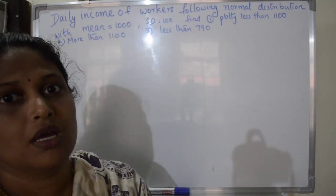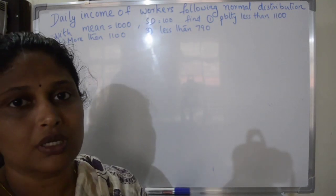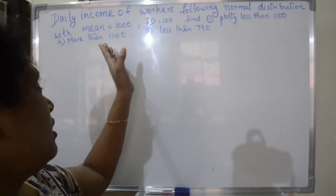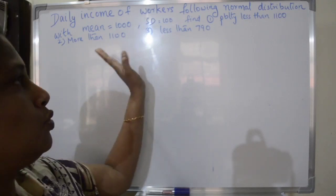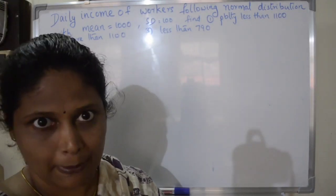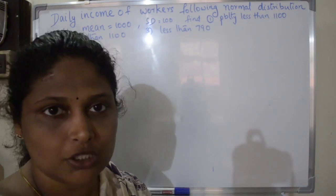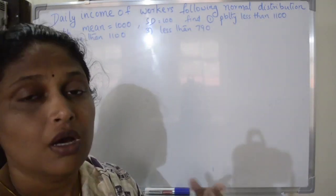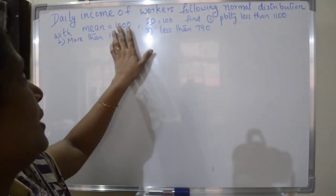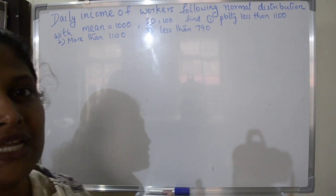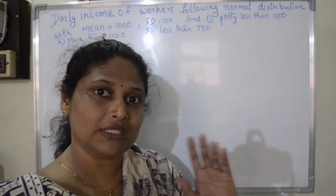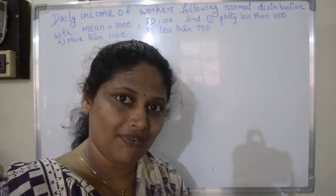With a mean of 1,000 and standard deviation of 100, the range varies from 900 to 1,100. That is, 1,000 plus 100 equals 1,100, and 1,000 minus 100 equals 900. So we need to find the probability for values less than 1,100.